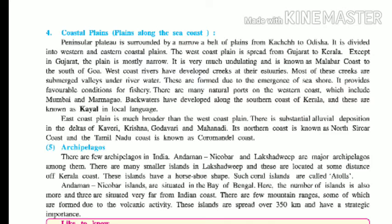These islands have a horseshoe shape. Such coral islands are called atolls. The Andaman and Nicobar Islands are situated in the Bay of Bengal, have mountain ranges formed from volcanic activity, and spread over 350 km. They have strategic importance for India.